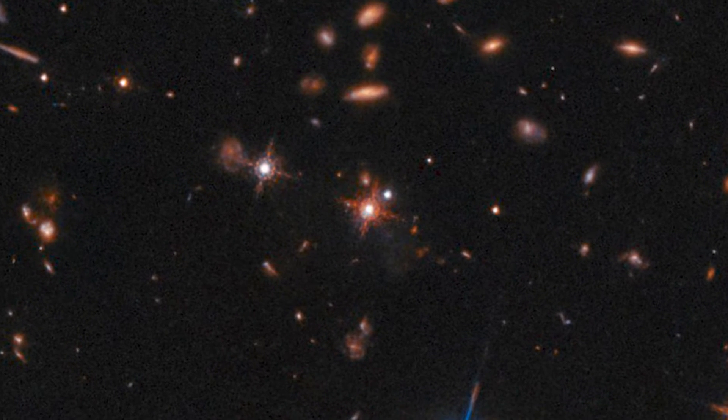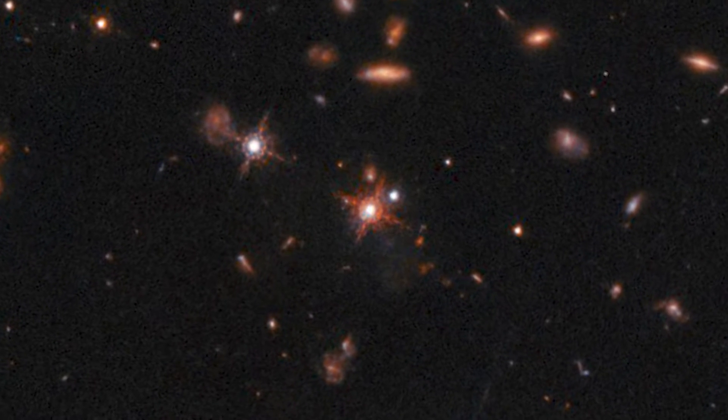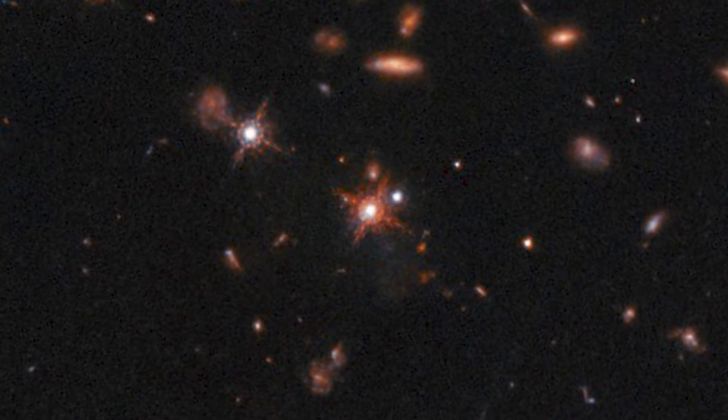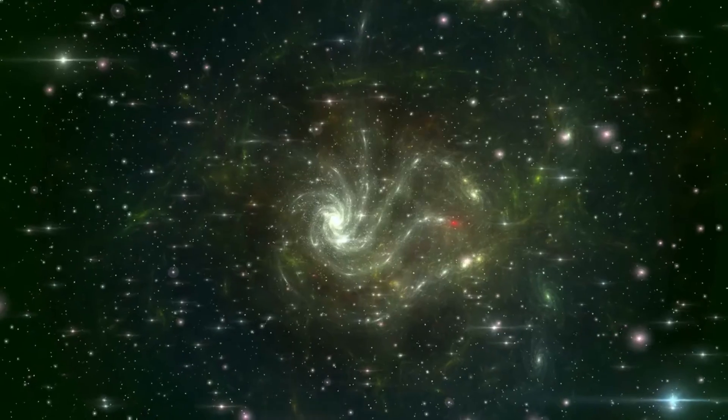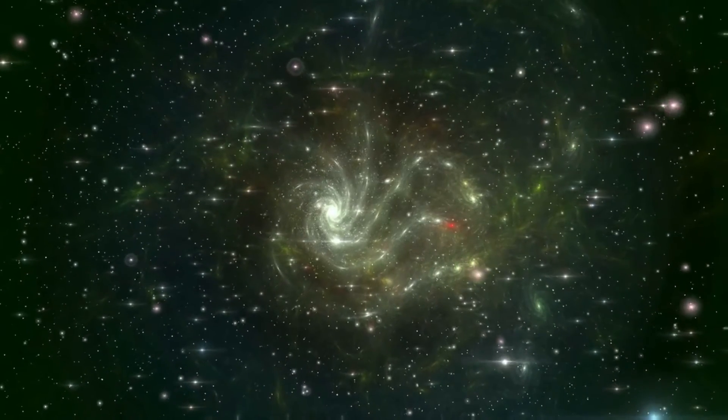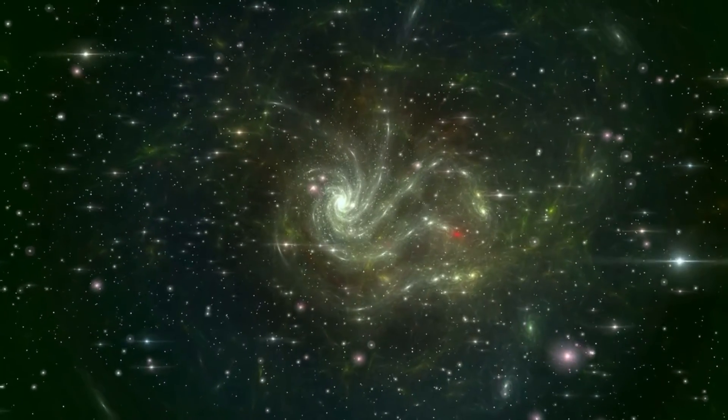Hubble's data archives provide hints that there may be more. This quasar and its host galaxy were chosen for this investigation because of the extended material shown in images taken by Hubble's Wide Field Camera 3. The team now thinks they may have been staring at the center of an entire cluster of galaxies, something only made clear by Webb's high-resolution imagery.